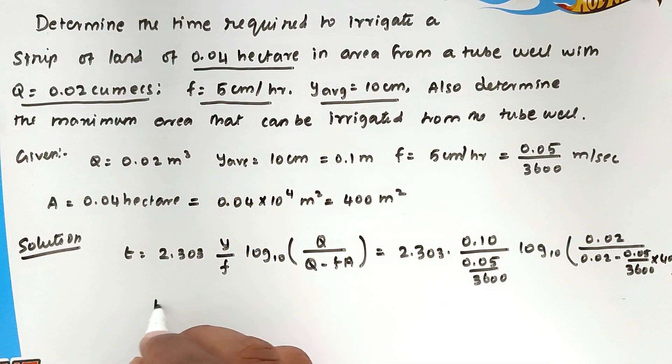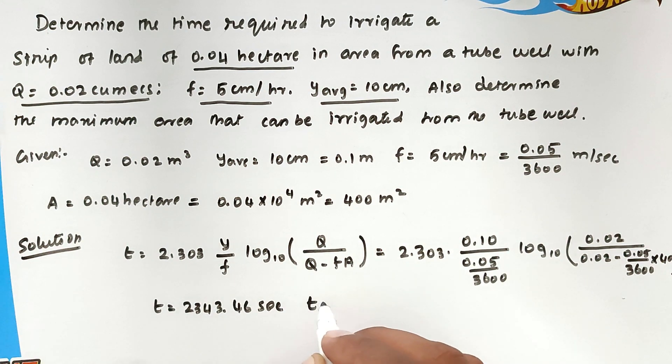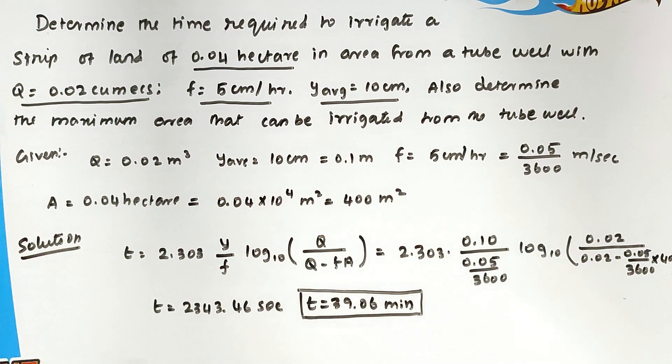Solving this, we get the value t = 2343.46 seconds. We can convert into minutes, so t = 39.06 minutes. This is the time required to irrigate the strip.